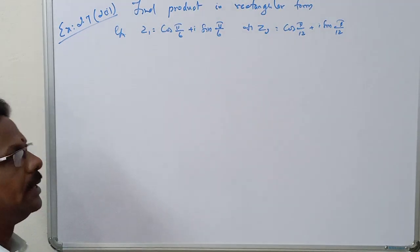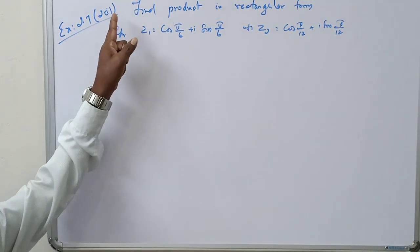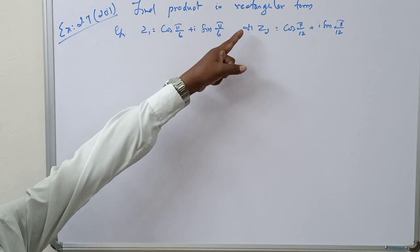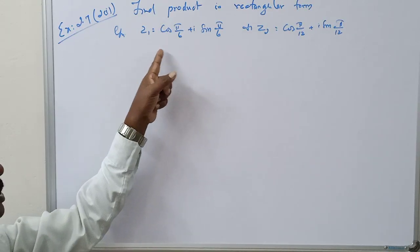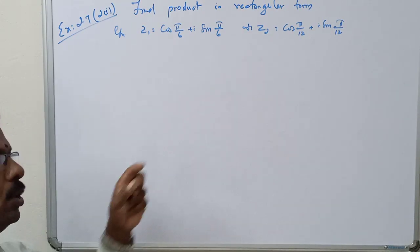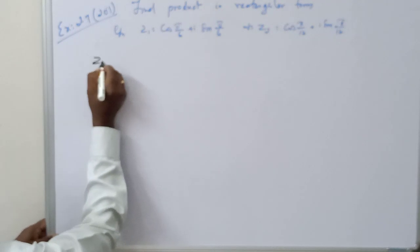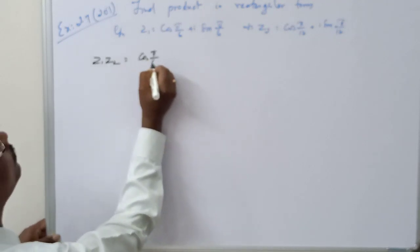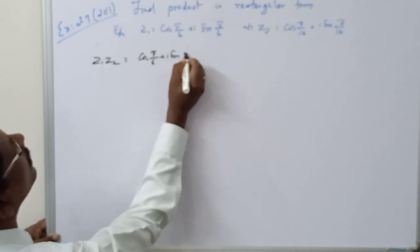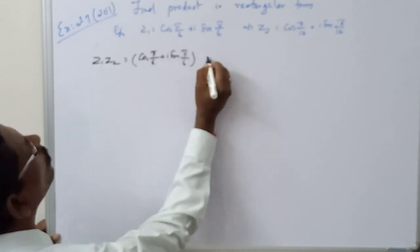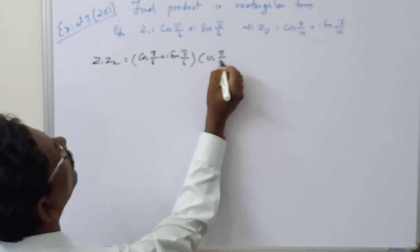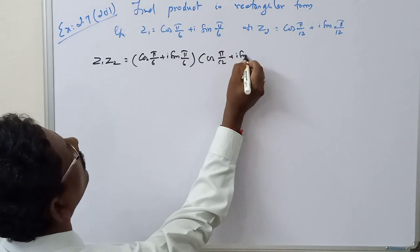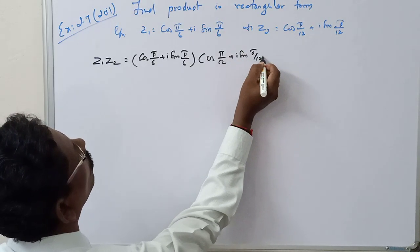Good morning everybody. Exercise 2.7, find product in rectangular form given Z1 and Z2. So product Z1 into Z2 is equal to cos 5π/6 plus i sin 5π/6 into cos 5π/12 plus i sin 5π/12.